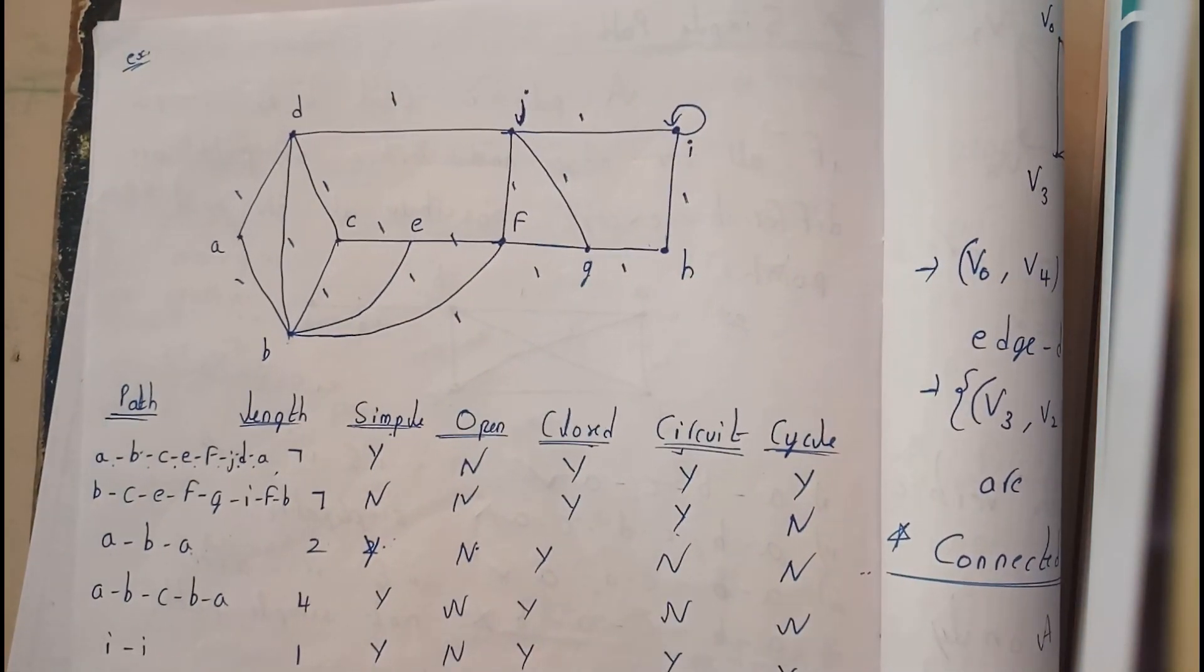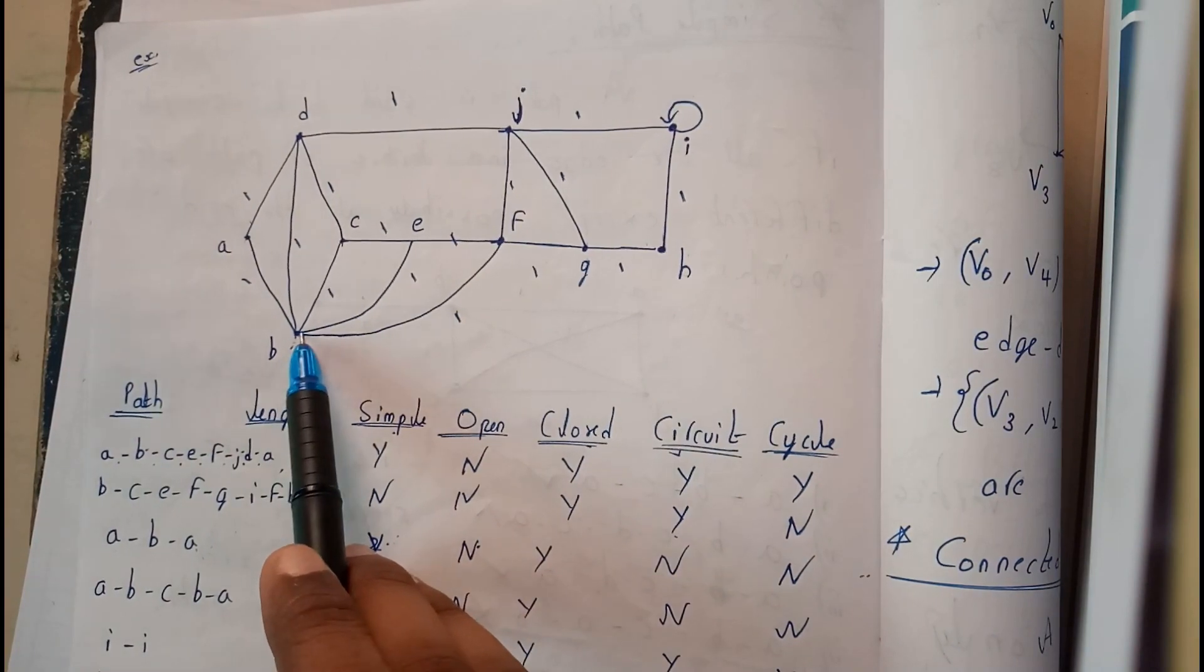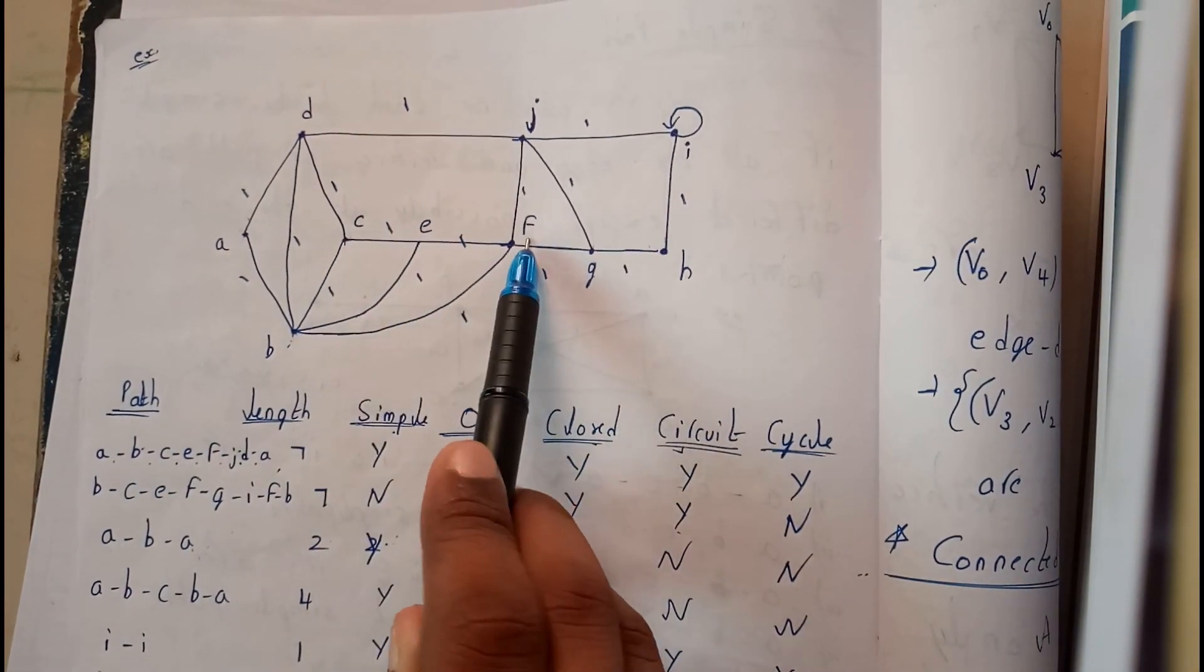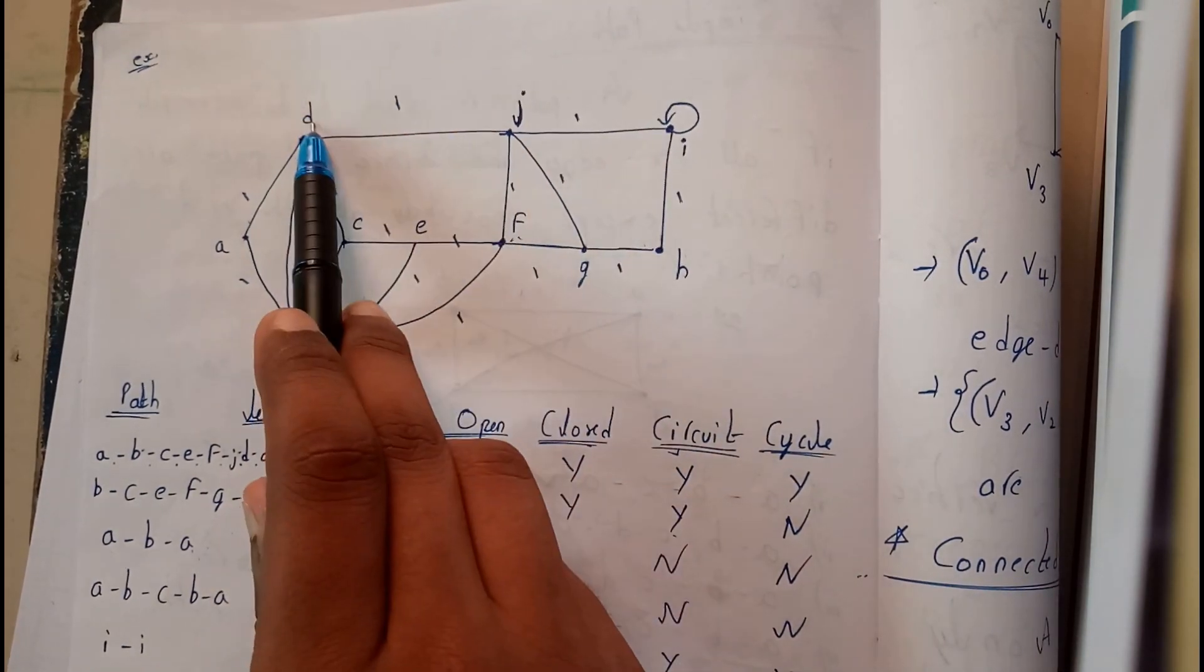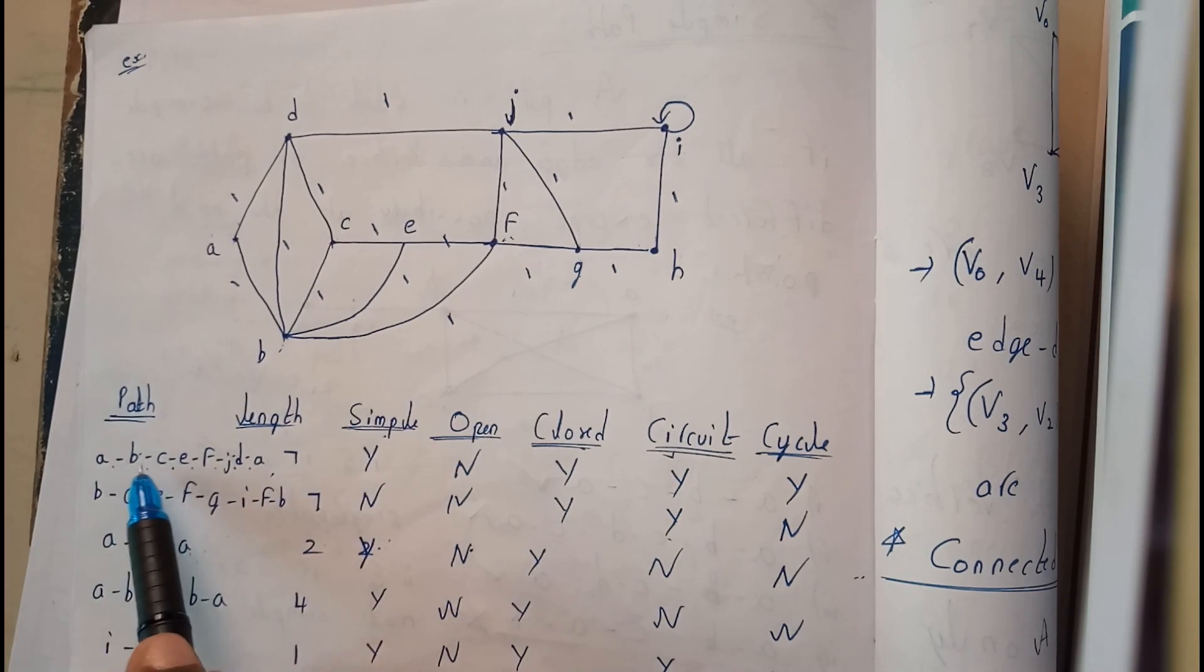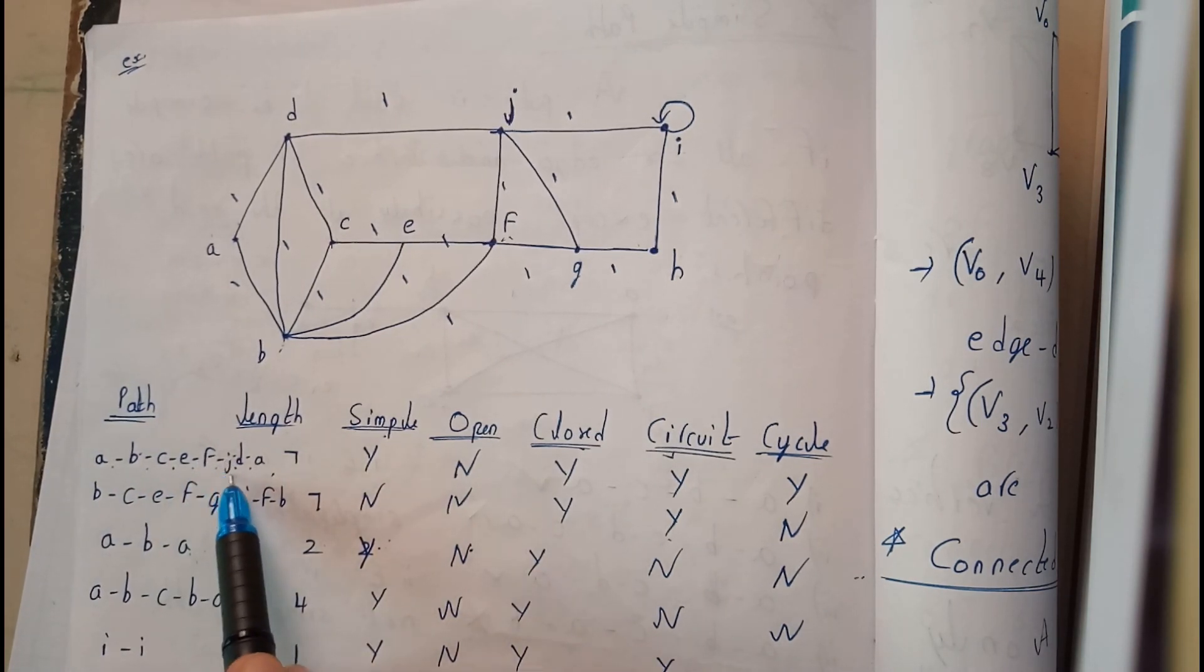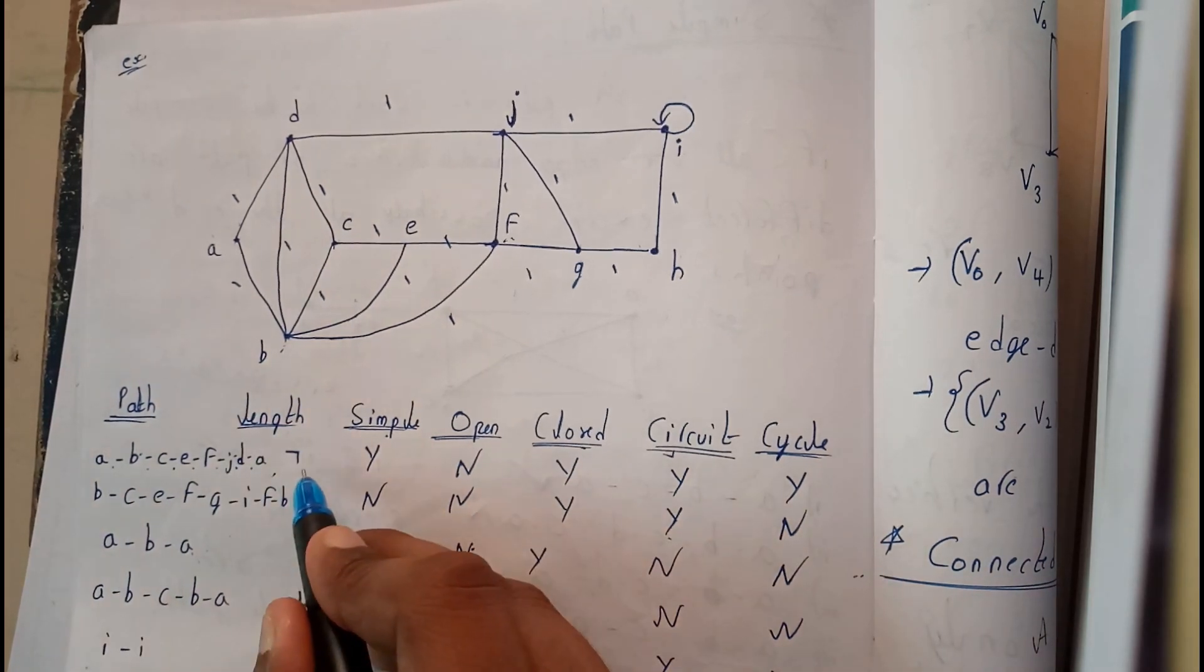Let us take the path A to B, B to C, C to E, E to F, F to J, J to D, D to A. I think we have travelled all the paths: 1, 2, 3, 4, 5, 6, 7. So the length is 7.